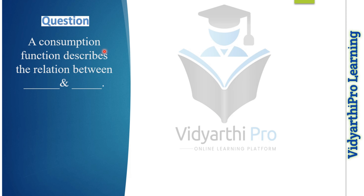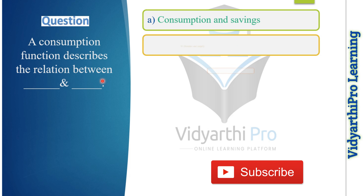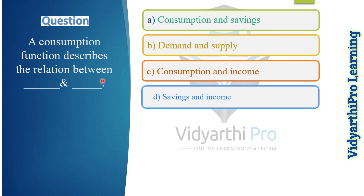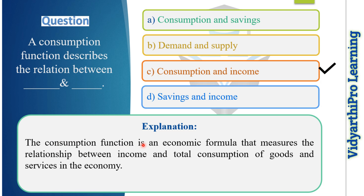Our next question: a consumption function describes the relationship between which of the following? Options: consumption and saving, demand and supply, consumption and income, or saving and income. The correct answer is option C, consumption and income, because the consumption function is an economic formula which measures the relationship between income and total consumption of goods and services in the economy.